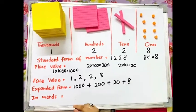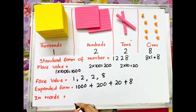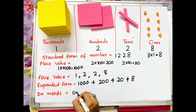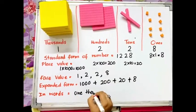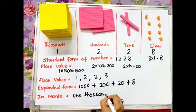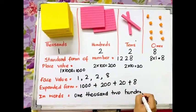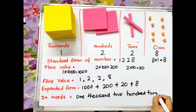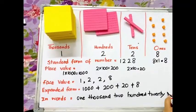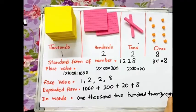Let's see how to write this number in word form. It will be 1228, one thousand two hundred twenty-eight.